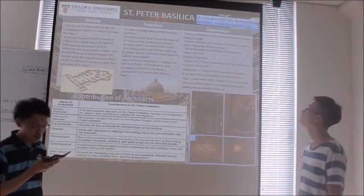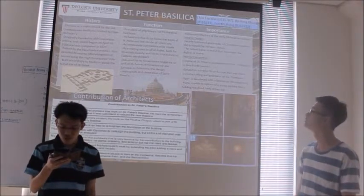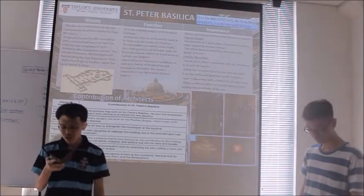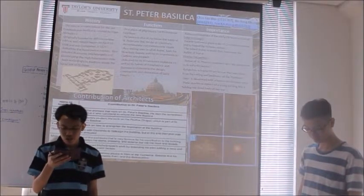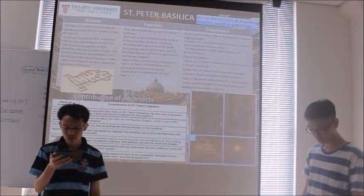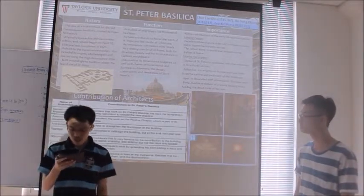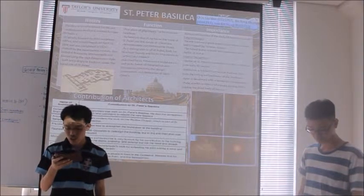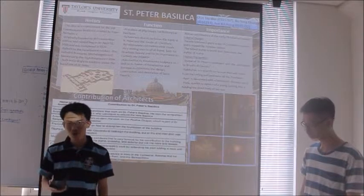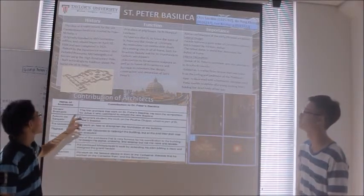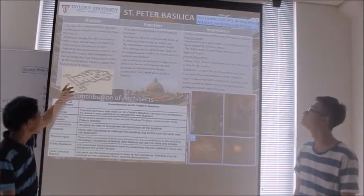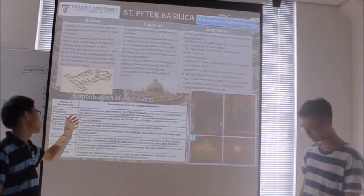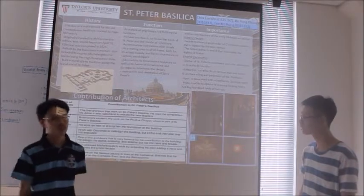The church was finally consecrated in 1626 by Pope Urban VIII, about 130 years after the consecration of the first church. Ever since, the building has been the centre of Christianity, drawing pilgrims and tourists from all over the world. And here we can see the plan of the building, and below is some of the contributions of the architects.